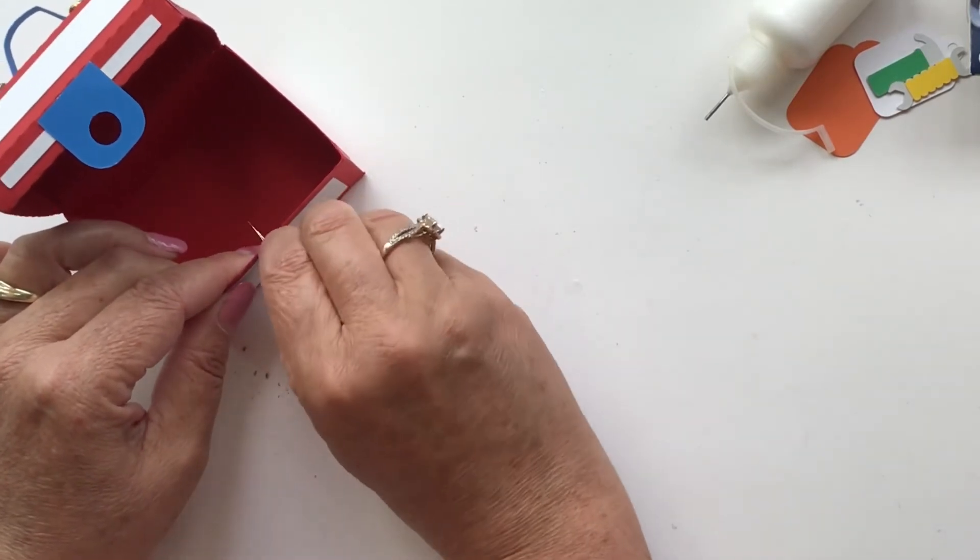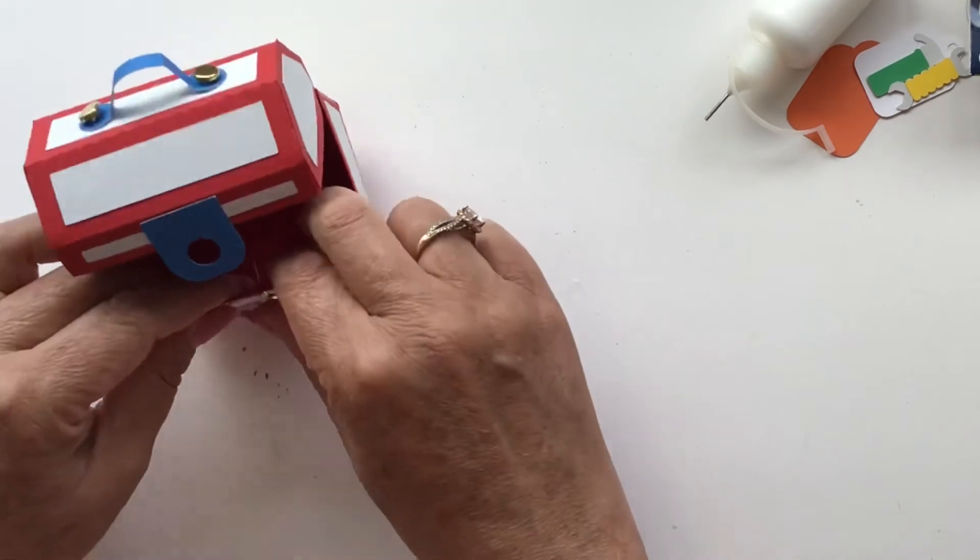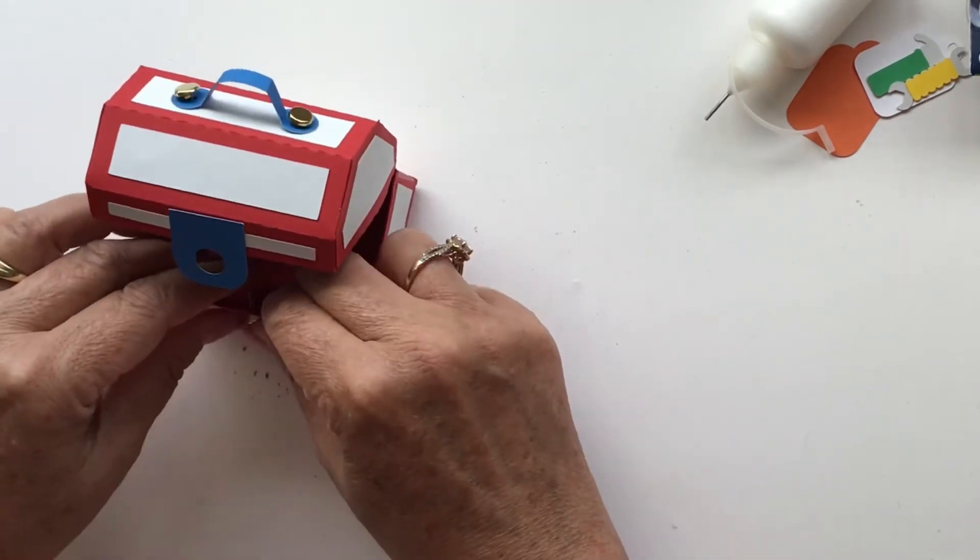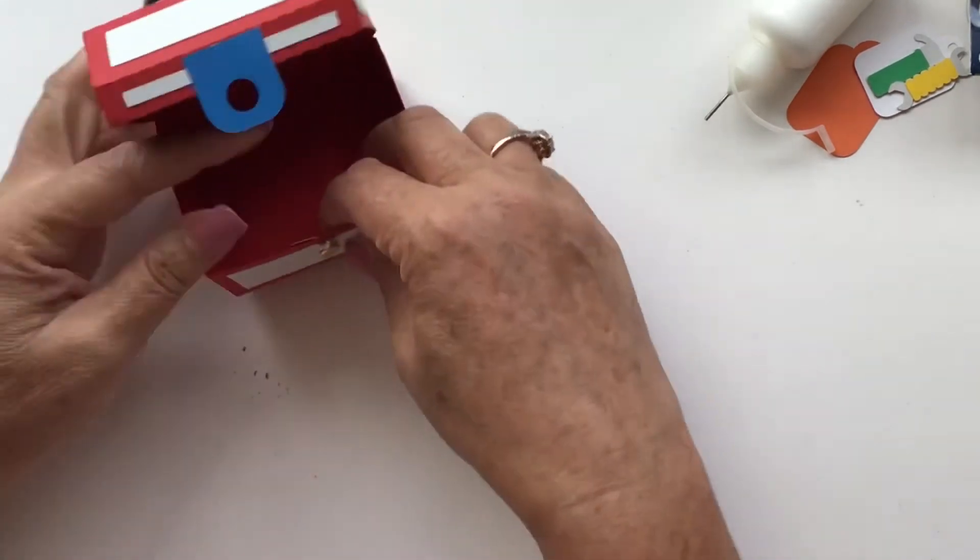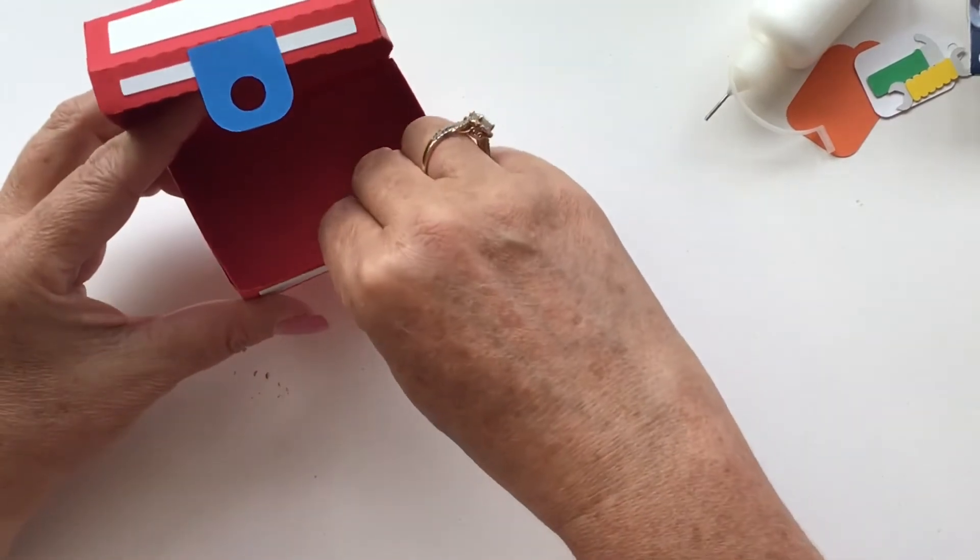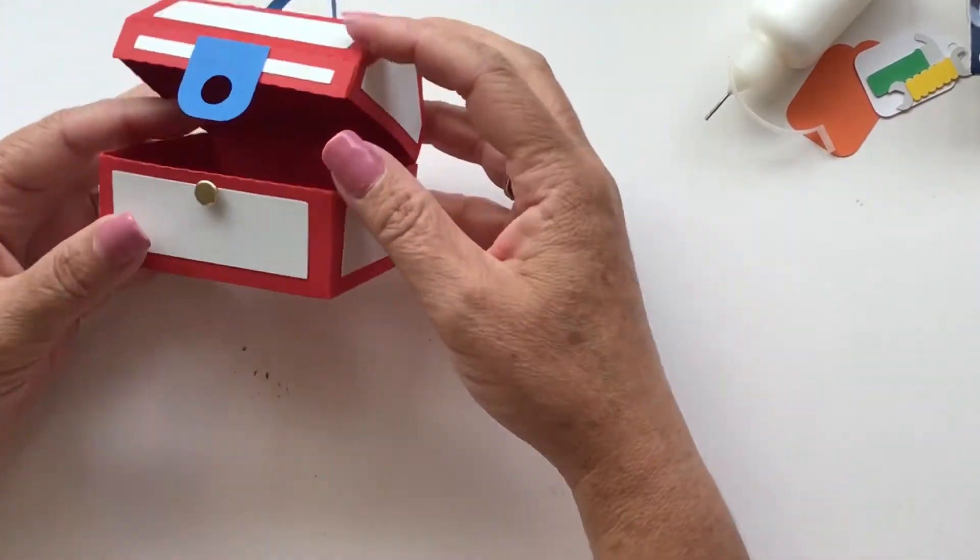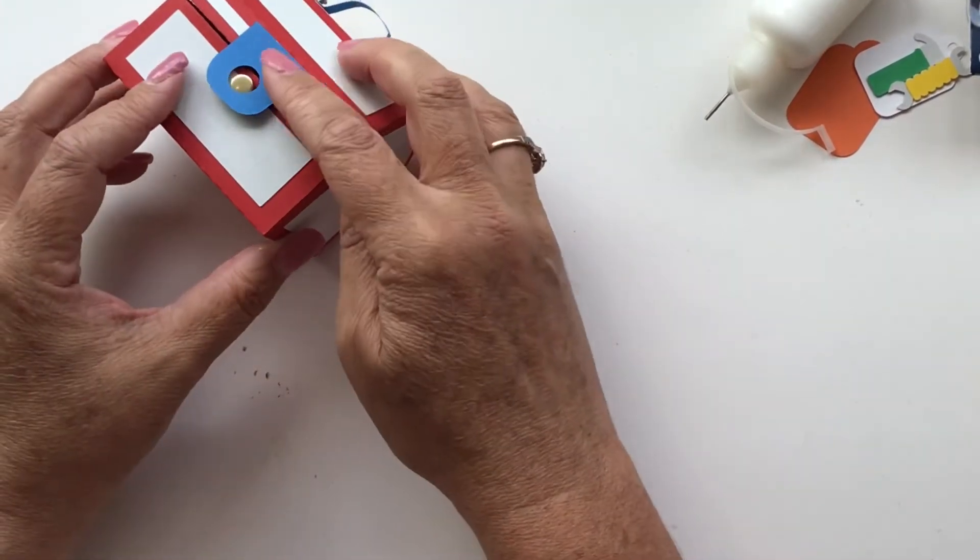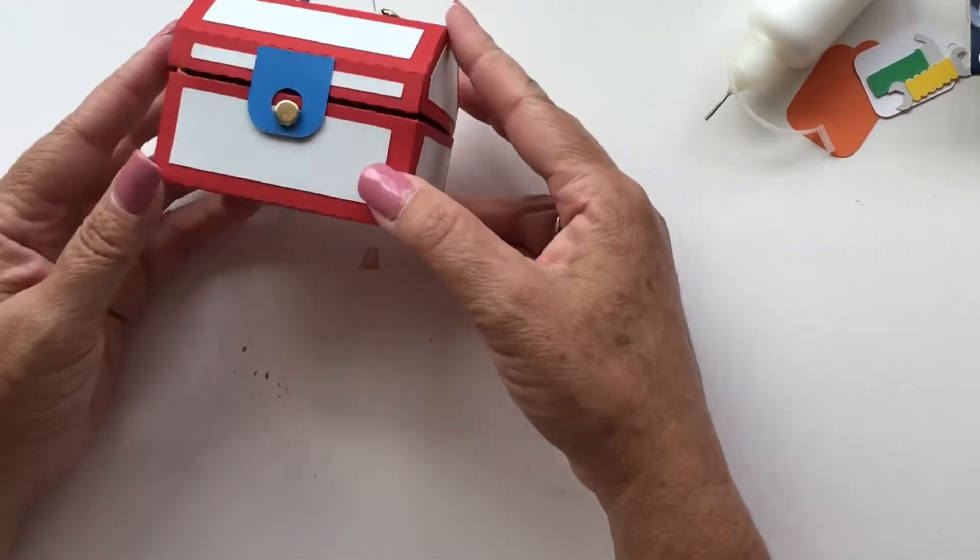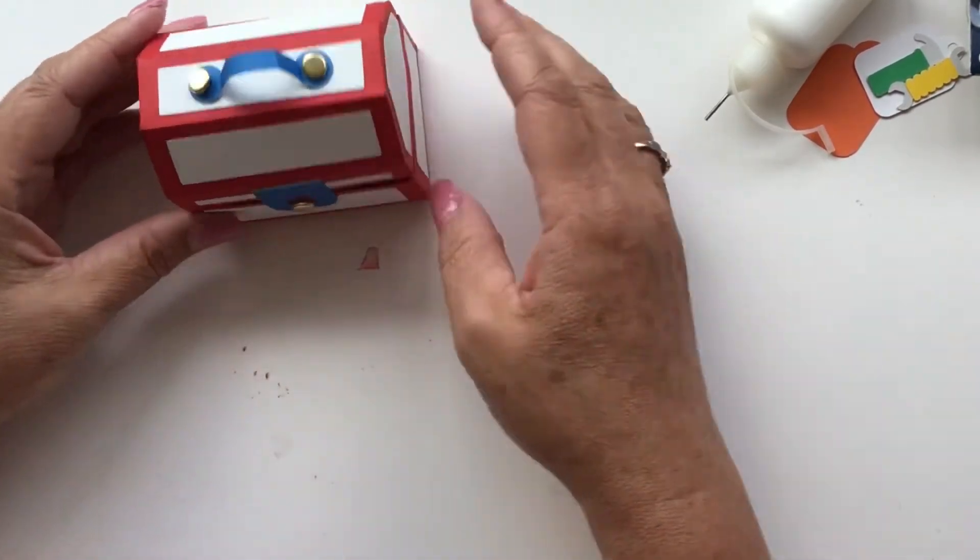I want to turn it so that there we go. And I didn't shove it quite all the way in. I mean you want it pretty close, but you do want it to have just a little bit, maybe that's too much, a little bit of a gap. And then to close it you just close that over the brad. And there is your little tool chest.